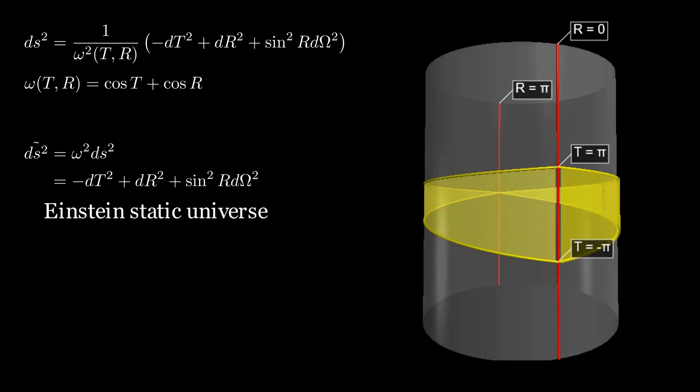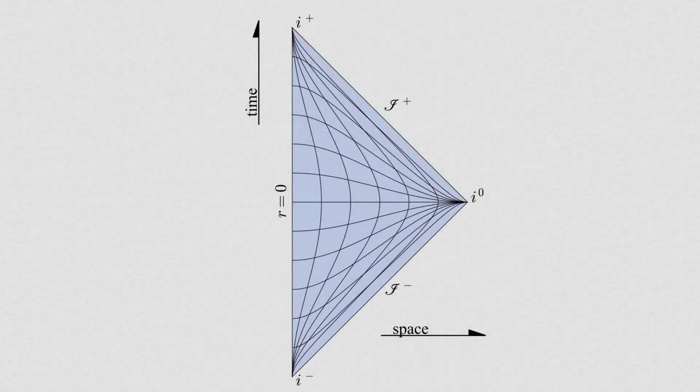But now, if we kept track of all the coordinate changes and boundaries of our coordinates, we could plot a diamond shape with time running vertically and space running horizontally and keep the light cones at 45 degrees. Now, we can label the different boundaries.